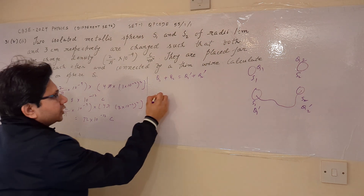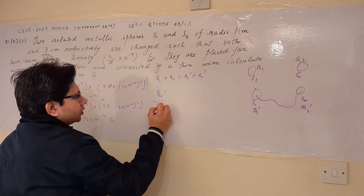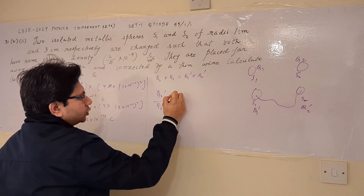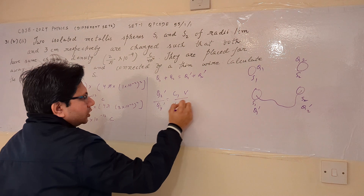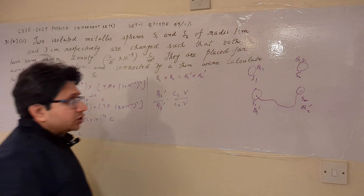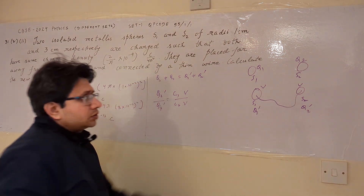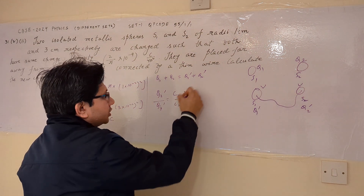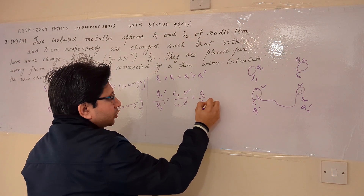Now Q2'/Q1' = C2V / C1V, because the potential V is the same for both spheres after connection. So V cancels and we get C2/C1.